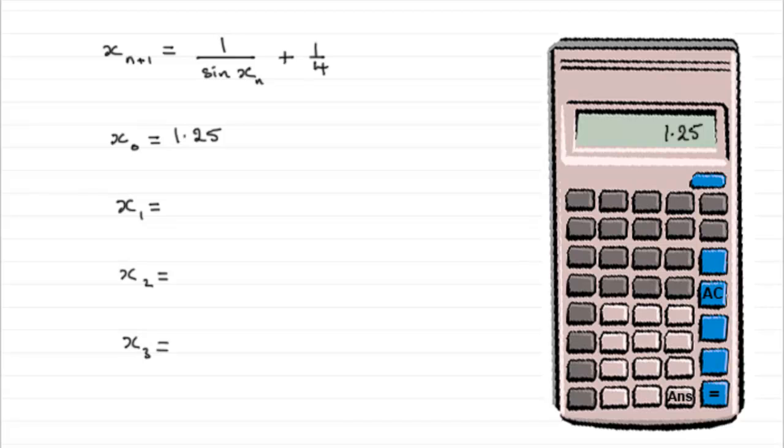Next you've got to enter this formula. But wherever you see x with a little subscript in, you've got to press the answer key. So it's going to look something like this. You enter the formula. I've entered it as 1 divided by the sine of answer. So you just press the answer key when you get there, plus 1 divided by 4. There's plenty of other ways that you could enter this onto your calculator. It depends what mode you're in. But as long as you enter something along these kind of lines. But the important point is that wherever you get x with the subscript in, you press the answer key.